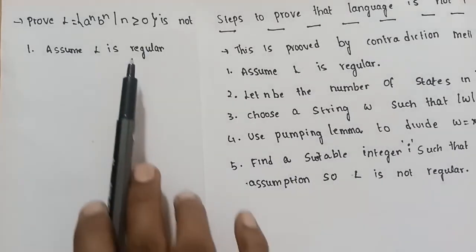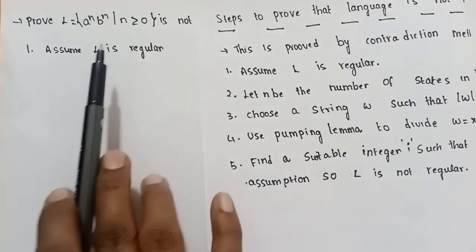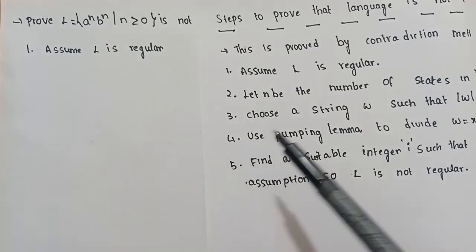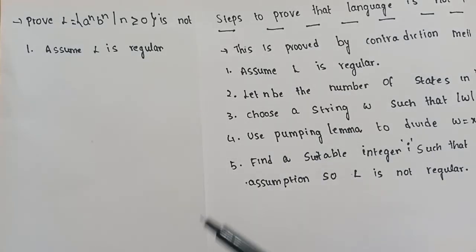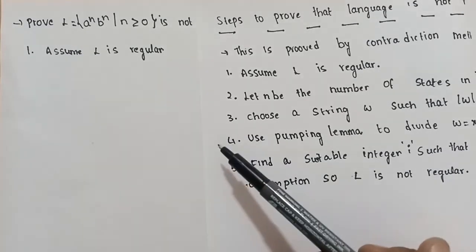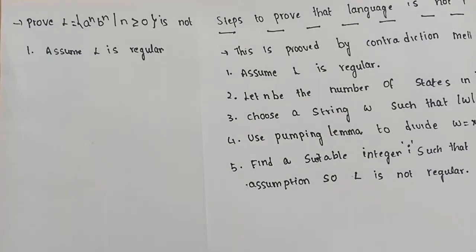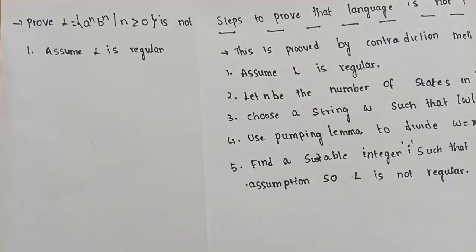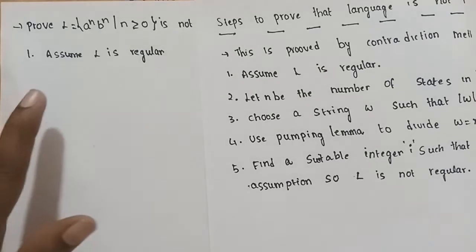First, we assume the language is regular — that is, it satisfies the pumping lemma properties. But if we can show the pumping lemma properties are not satisfied, that gives us a contradiction. So using the contradiction method, we will be able to prove the language is not regular.